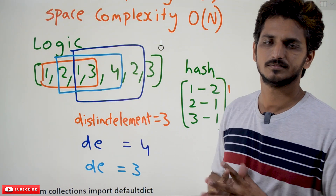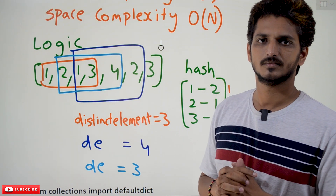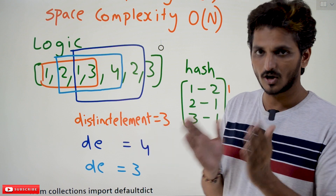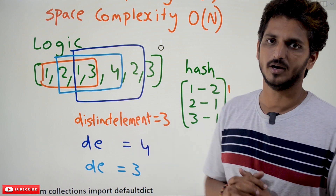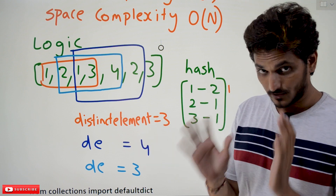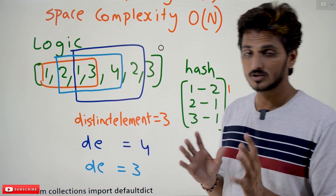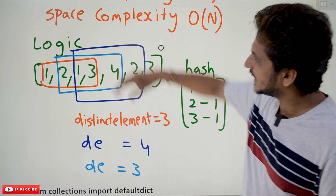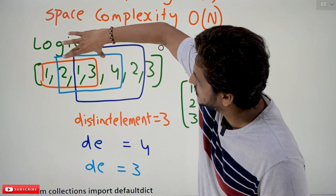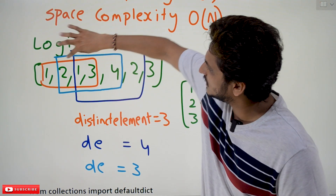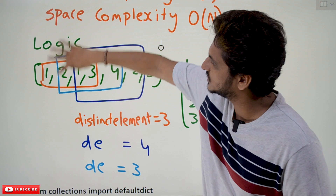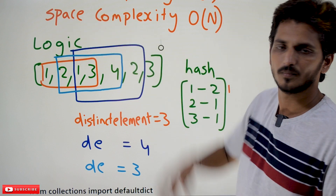Add it to a list — that is the output you have to provide. From here onwards, we consider the next window. This blue box is our next window.